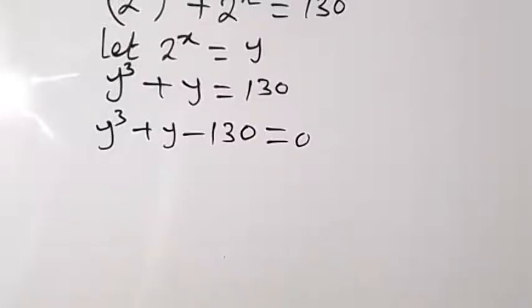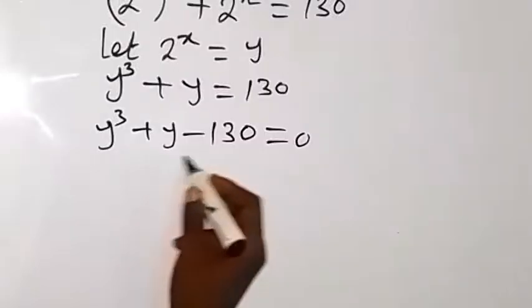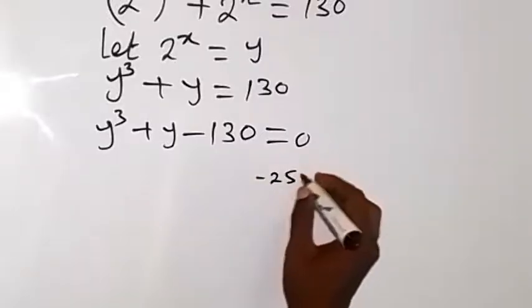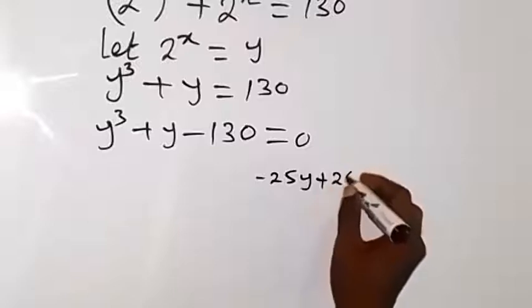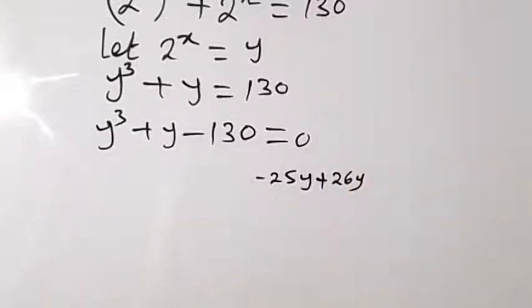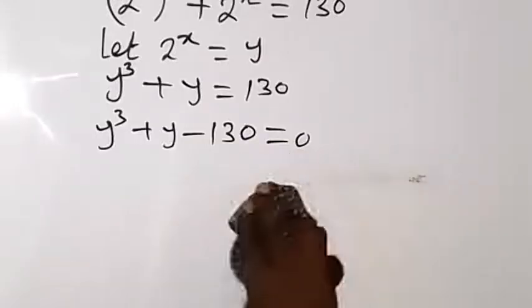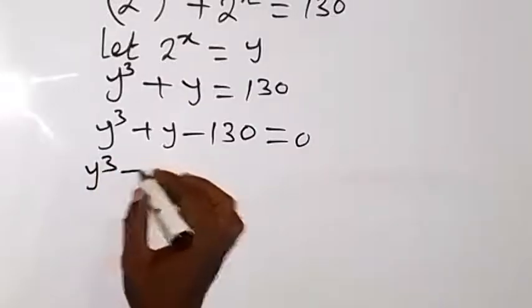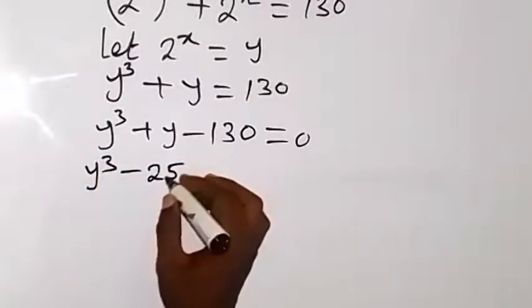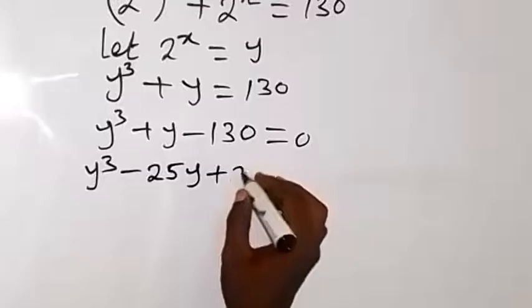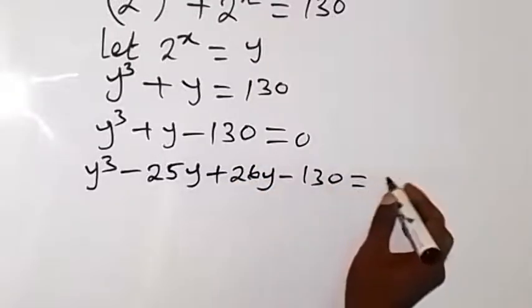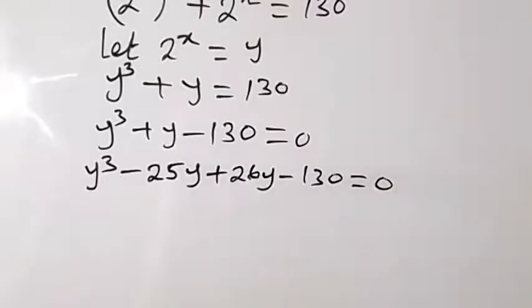Then from here we can replace this plus y with minus 25y then plus 26y. So when we factor that, we replace y with that and this will give us y cubed minus 25y plus 26y minus 130 then that will be equal to 0. Then we can group that.